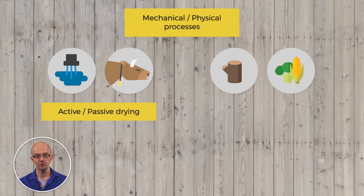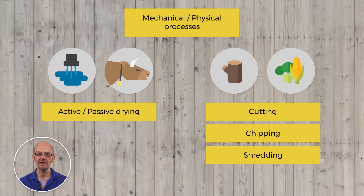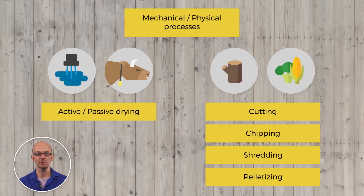Forestry crops and residues and agricultural crops and residues are less wet, but they often need size reduction for efficient energy production. This can be done by cutting, chipping, shredding or palletizing. Size reduction is probably the most inefficient of all unit operations, consuming large quantities of energy and having no economy of scale.